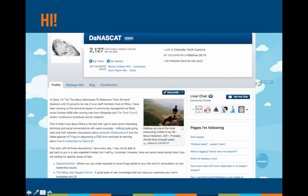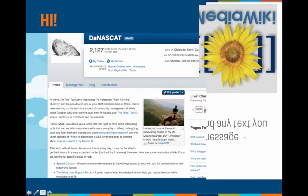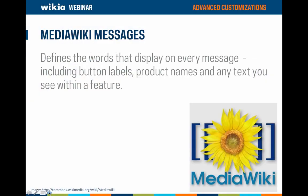We'll be focusing specifically on MediaWiki messages and using CSS. The base software wikis run on is called MediaWiki, and it is also one of the default namespaces on each of your wikis. This namespace defines the text you will see on your wiki's interface — including button labels, product names, and any text within a feature. This includes the word 'edit' on the edit button, 'message wall' on your message wall, and 'follow' on each page — and much more.